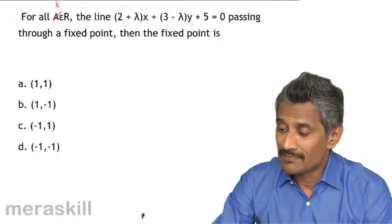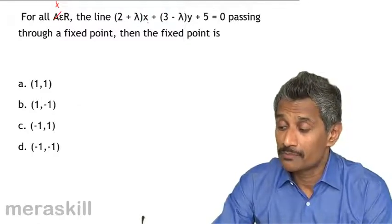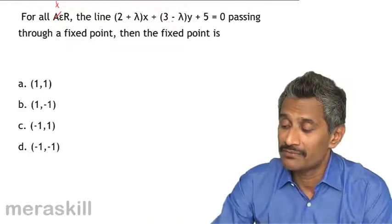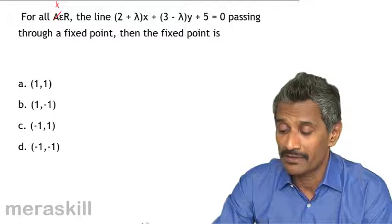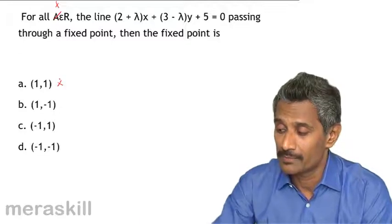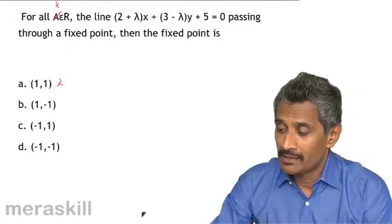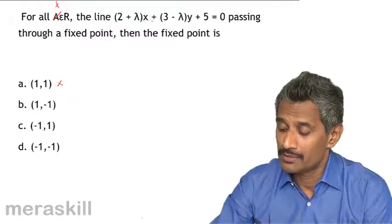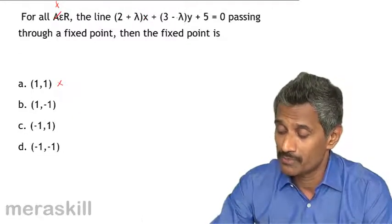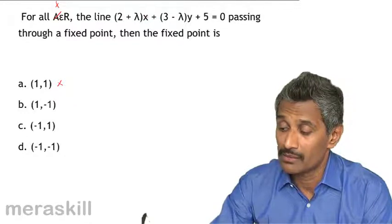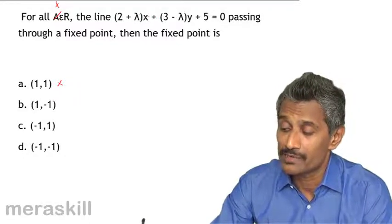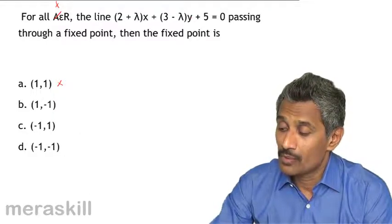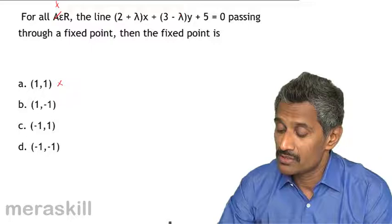Which means that we could possibly put x as 1 and 1, we put x as 1 and 1, lambda definitely get cancelled but 2 plus 3, 5 plus 5 is 10. So, this is out of question. And, we have 1 comma minus 1. This is also, this may also not be possible or minus 1 comma 1. 1 comma minus 1. We can substitute 2 plus lambda into minus 1 and 2 plus lambda into 1 and here that does not satisfy.